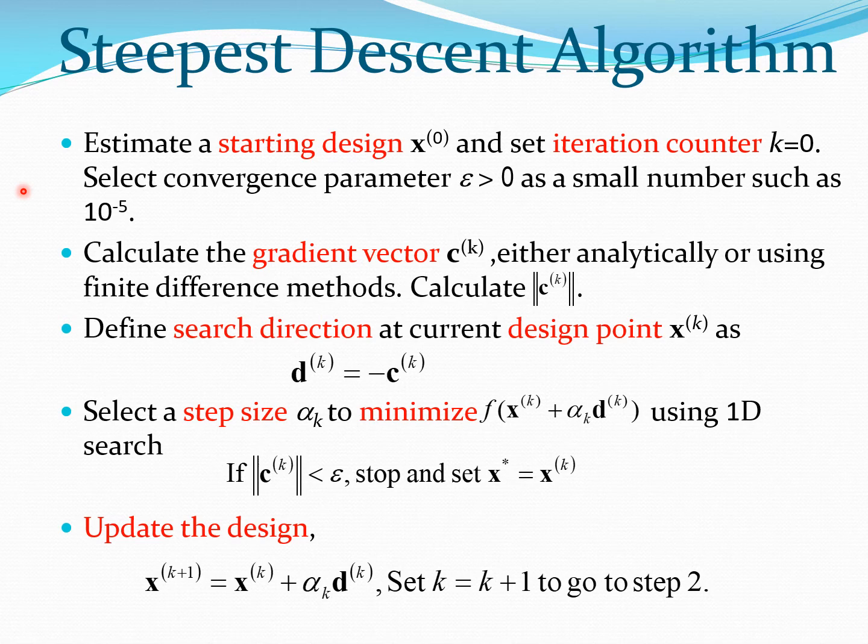Now we are going to write out the steepest descent method. This particular way of writing the algorithm is generally common across a variety of methods, and you are going to see that the search direction is going to keep changing depending on the method, and the remaining parts are going to be more or less the same. Essentially all these methods require a starting design x^0. We choose this particular design and set the iteration counter k to be equal to 0. These are fundamental steps in gradient-based methods. Now we also select some kind of convergence criteria—a small number—and we could select maybe 10 to the power of minus 5 here.